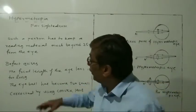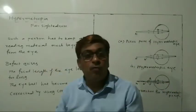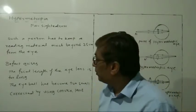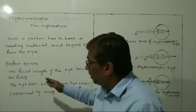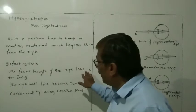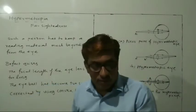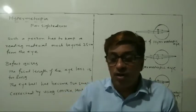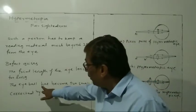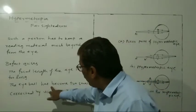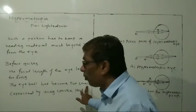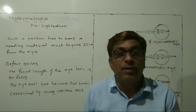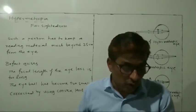This defect arises due to two main points. One is: the focal length of the eye lens is too long. The second point is: the eyeball has become too small.